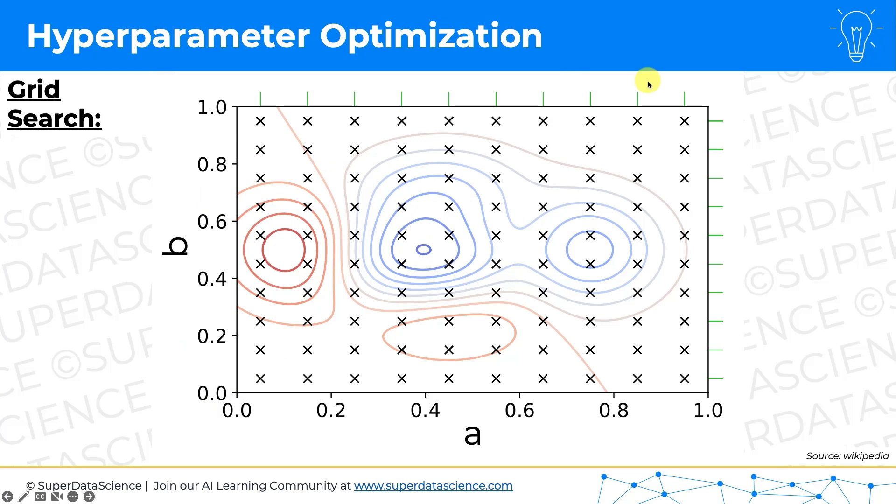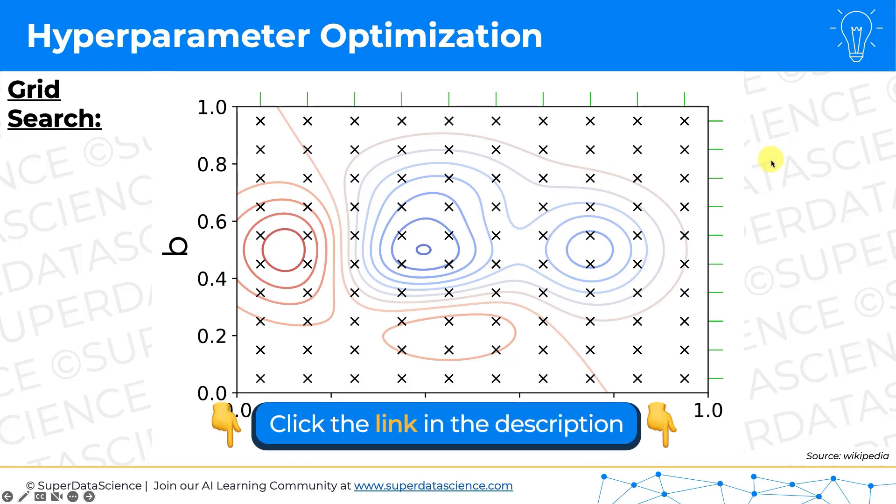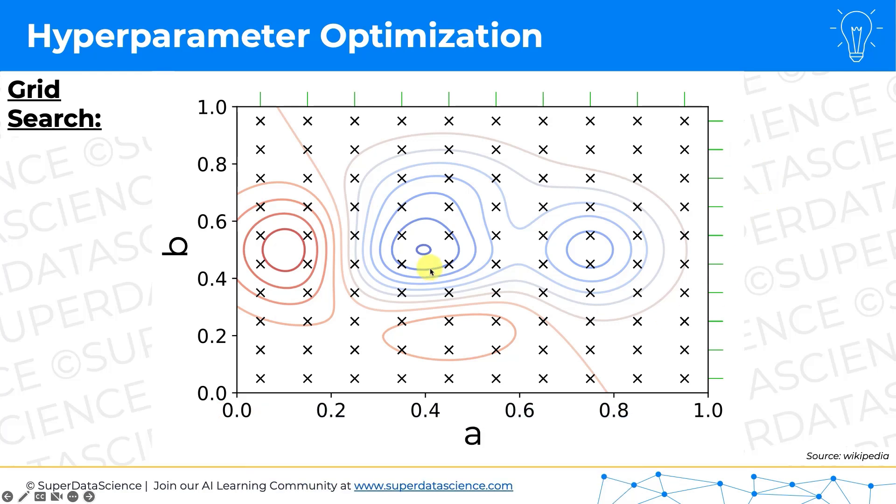And this is a two-dimensional projection of a three-dimensional plot. So if you imagine in three dimensions, the third dimension is basically what we're optimizing. So let's say we're optimizing R squared. We're looking for the best model with the best R squared. So blue represents the height of that third dimension, in this case, R squared.